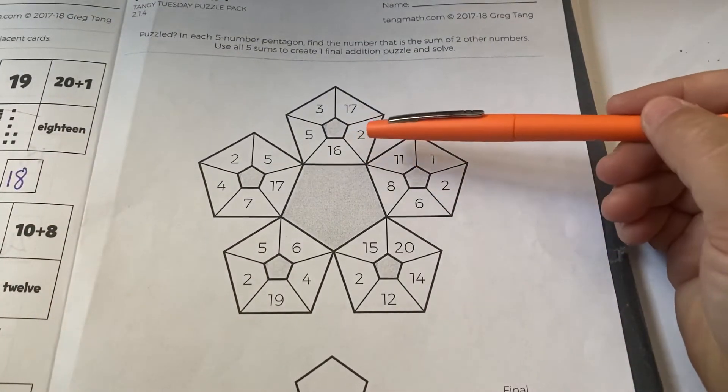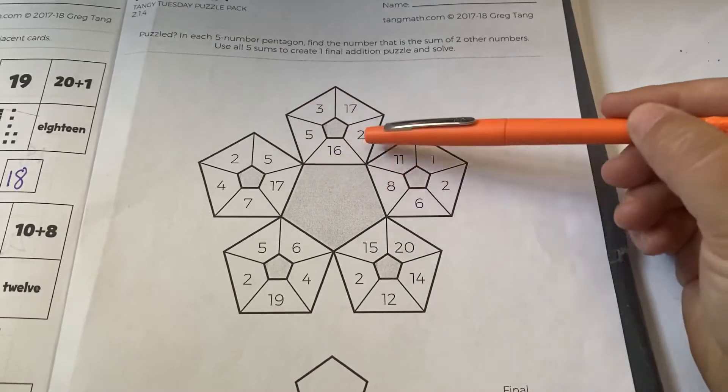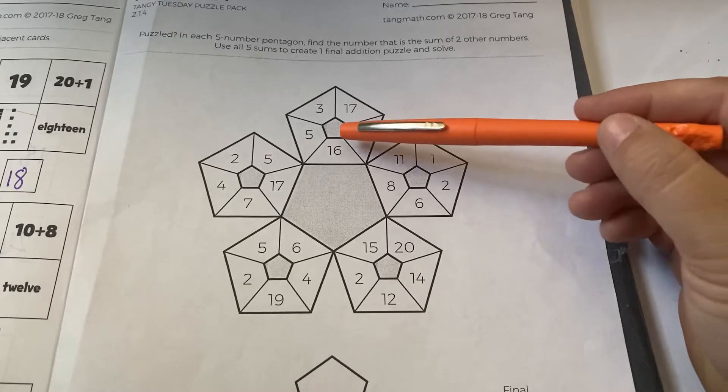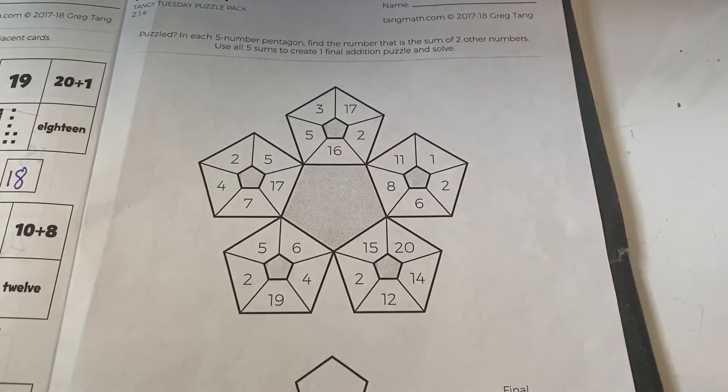But what you're going to do is you're going to take the two numbers that make up another number and then you're going to write that sum in the middle. So let's see if we can figure this out.